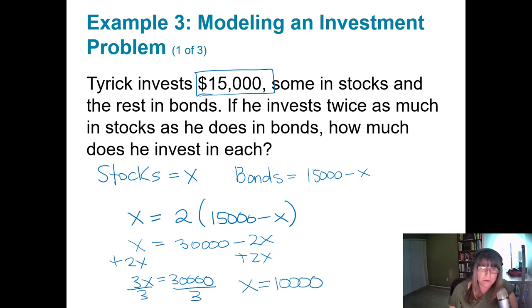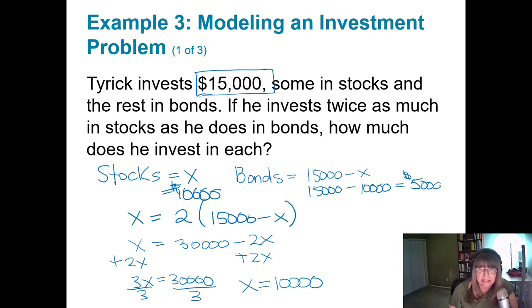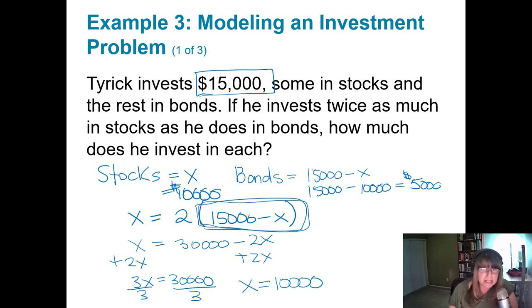Now let me show you an easier way to do this problem. Reading it again: stocks plus bonds equals $15,000. He invests twice as much in stocks as in bonds. If we know nothing about bonds, let bonds be x and stocks is twice as much, so 2x. That gives us 3x equals $15,000.